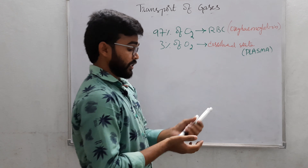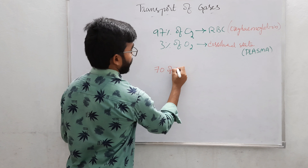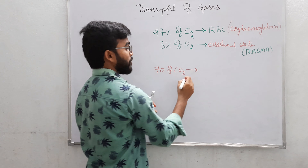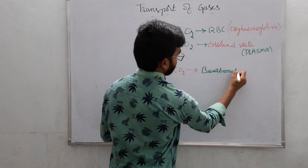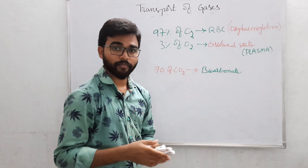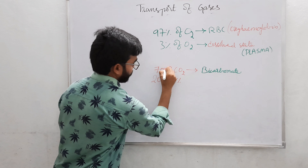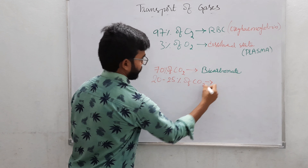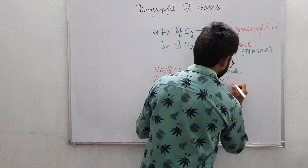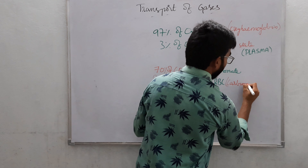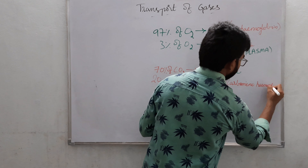Transport of gases. How the oxygen is carried out from the lungs to the tissues and the carbon dioxide from the tissues to the lungs. About 97% of the oxygen is carried out through RBC in the form of oxyhemoglobin, and the remaining 3% of the oxygen is carried out in the dissolved state through plasma.